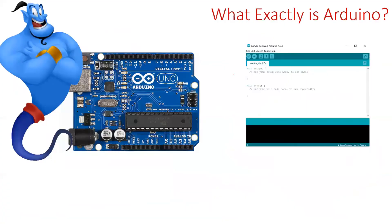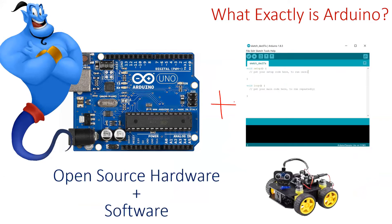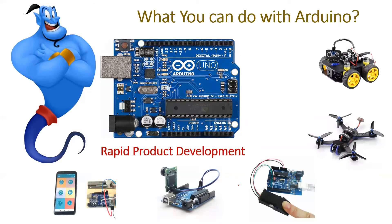So what exactly is Arduino? Arduino is a combination of open source hardware and software. This open source hardware and software combination will help you to design countless electronic projects in the shortest possible time. Arduino is used for rapid product development by hobbyists, students, and professional electronic designers.